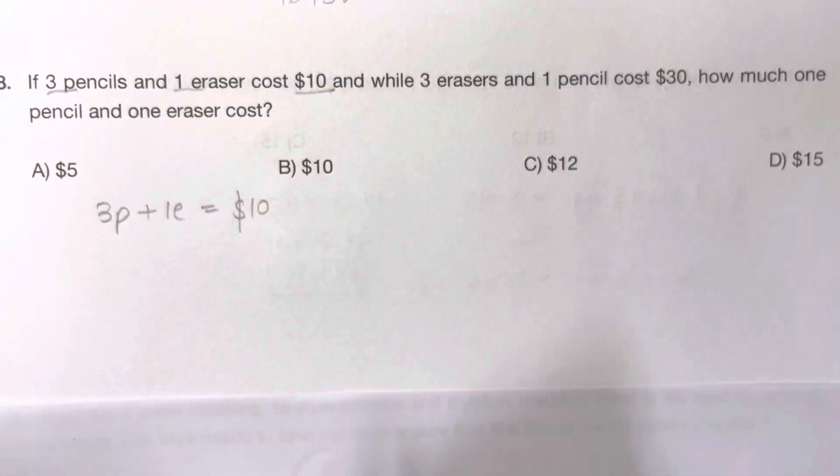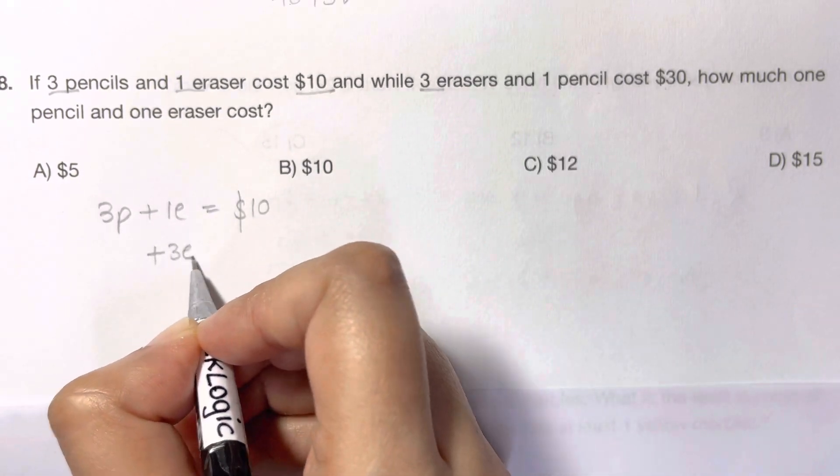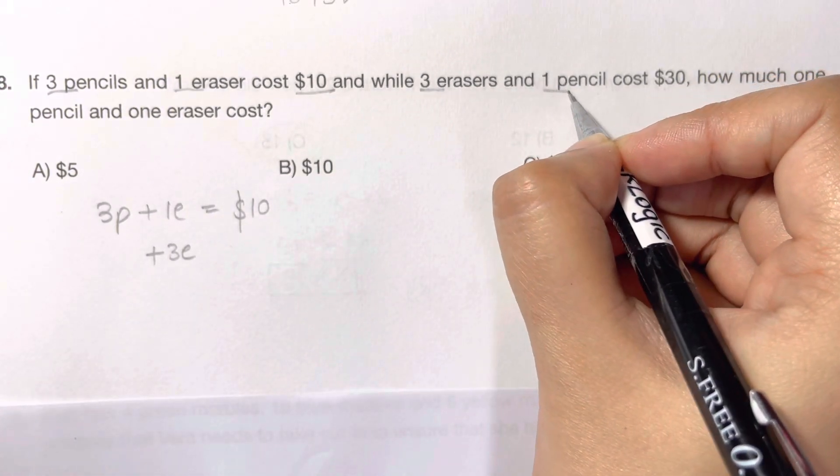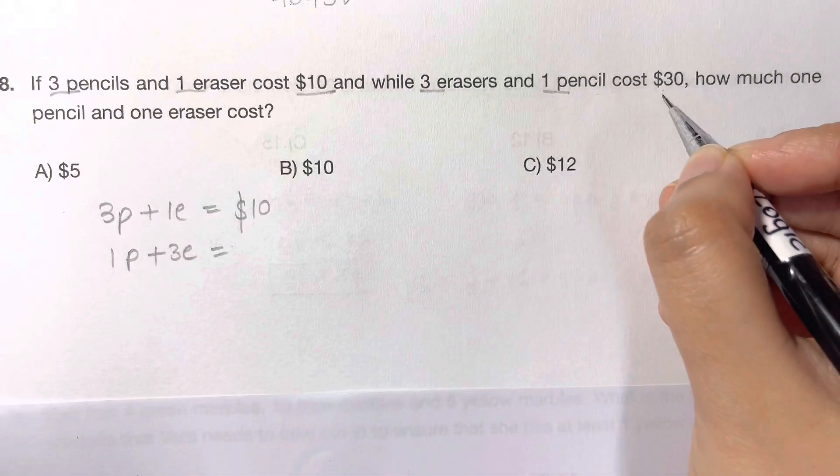Now three erasers and one pencil: I'm going to write that as three erasers plus one pencil equals thirty dollars.